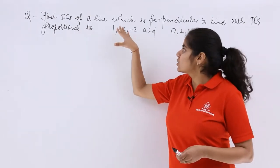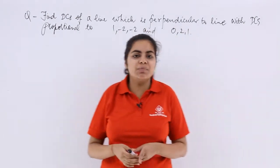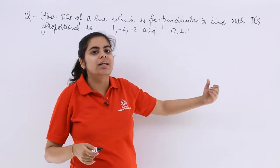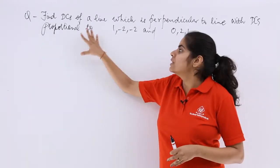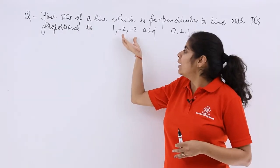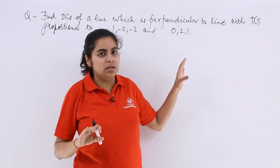The question is find the direction cosines of a line which is perpendicular to a line with the direction cosines proportional to 1, -2, -2 and 0, 2, 1.